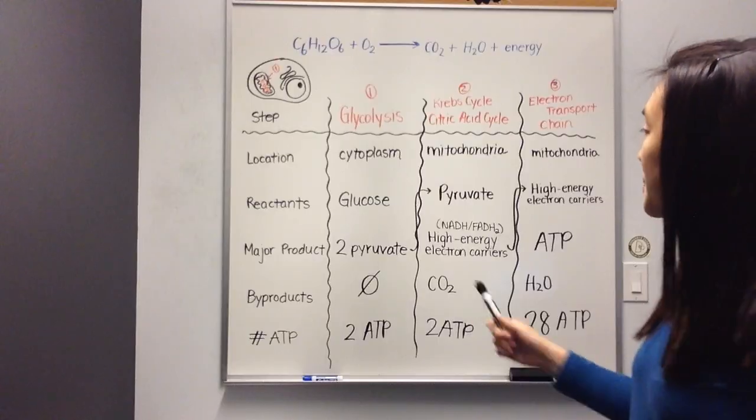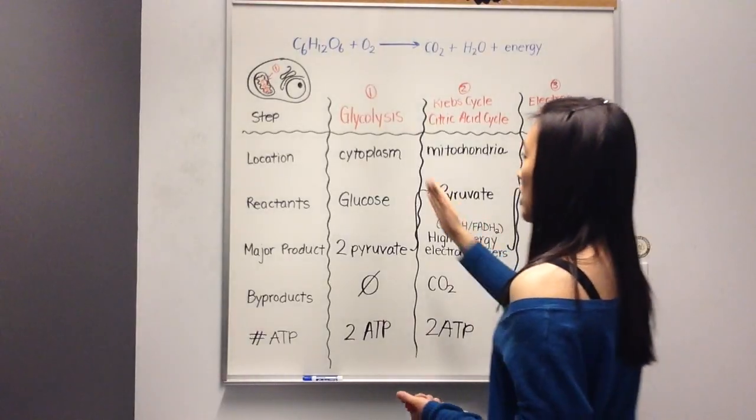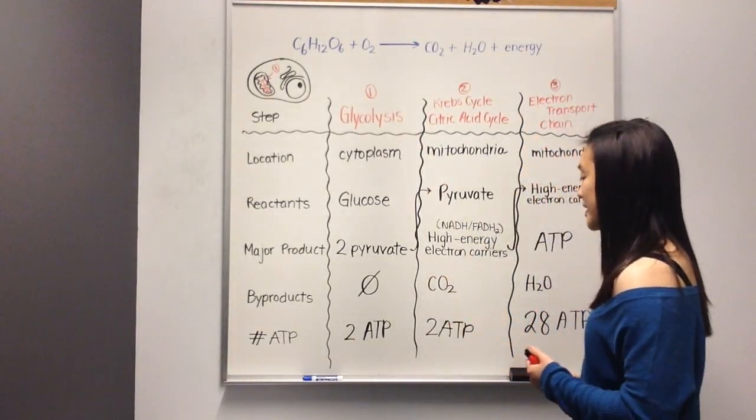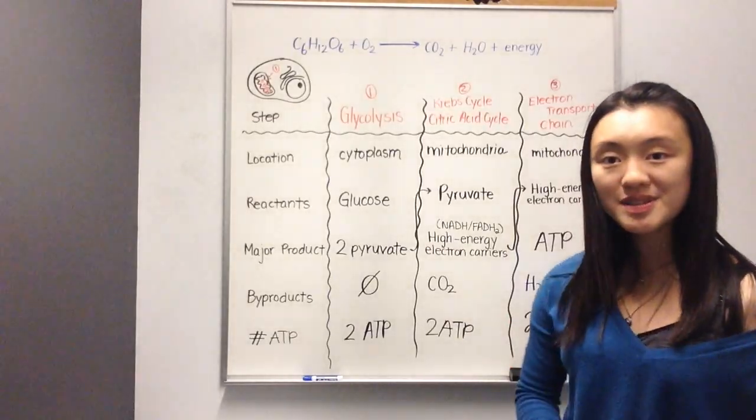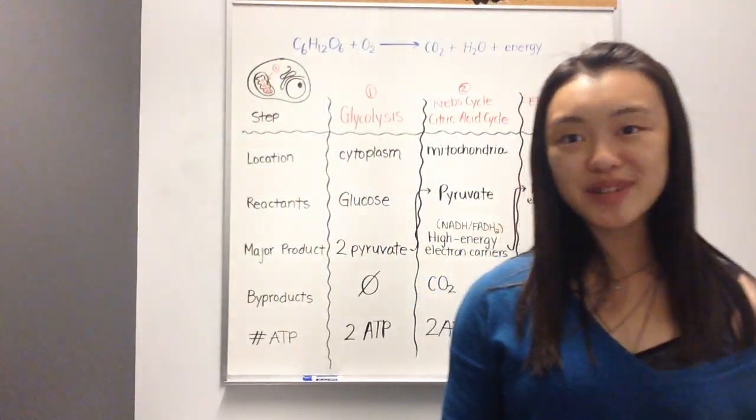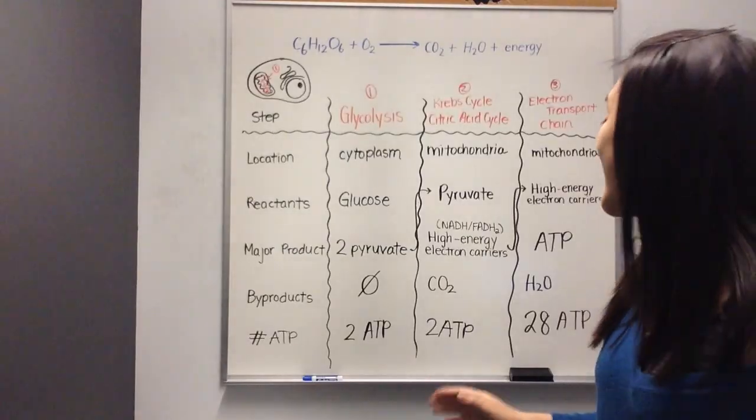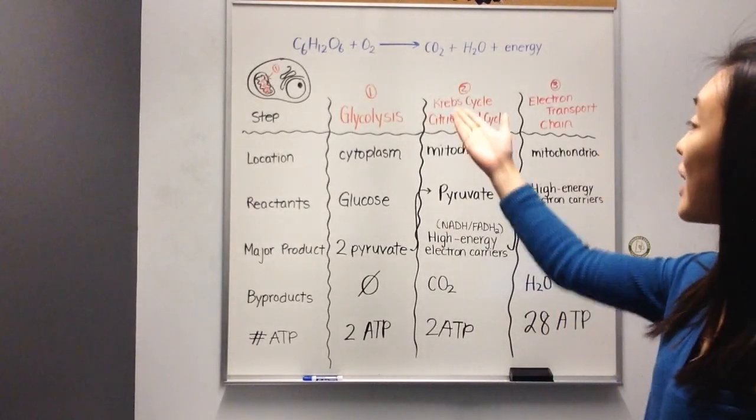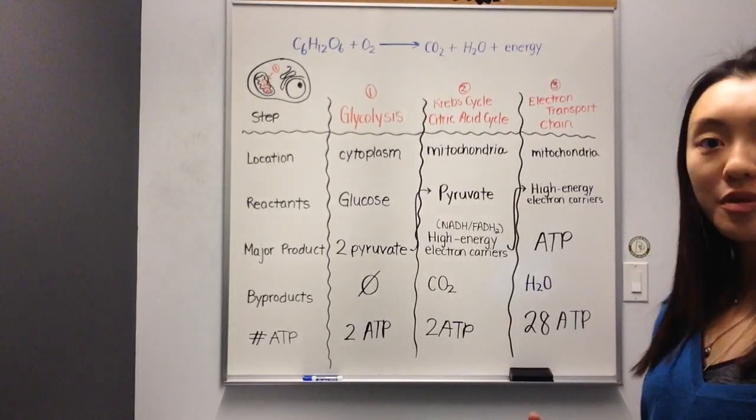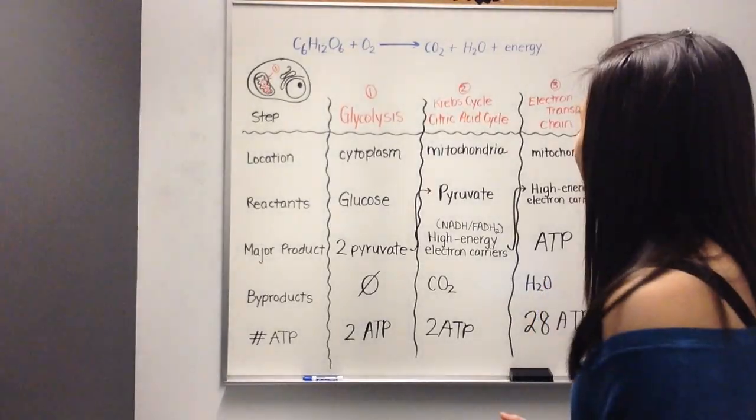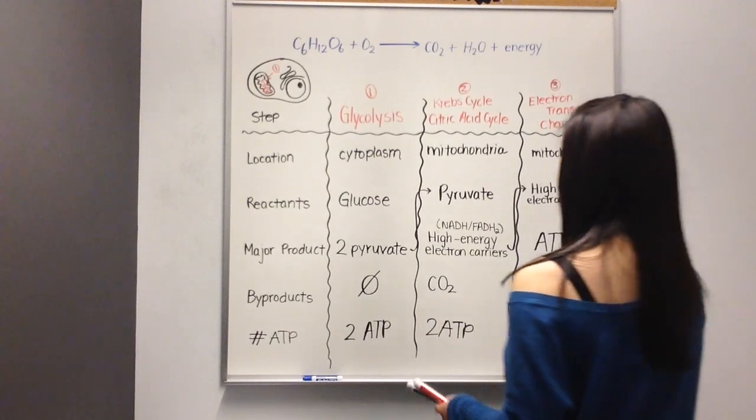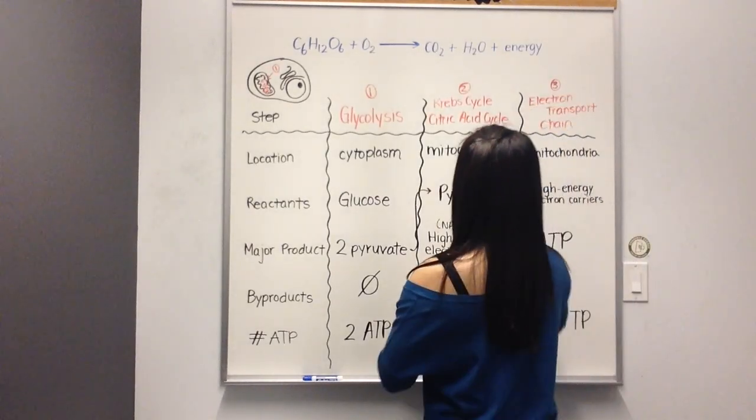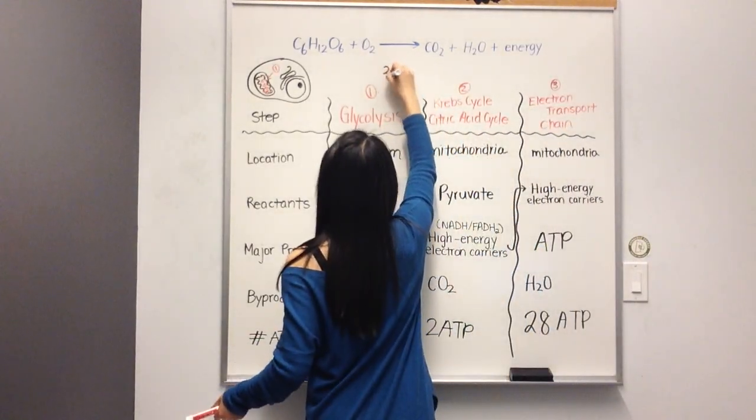Ultimately, we have two ATP produced in glycolysis from the cytoplasm. There's two ATP produced in the Krebs cycle, which happened in the mitochondria. And finally, 28 or 30 ATP produced as well in the mitochondria through the electron transport chain. In the end, we have 2 plus 2 plus 28, which gives us a total of 32 ATP.